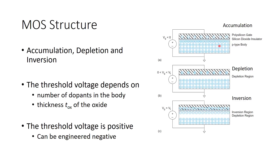In the first part of the figure, you can see that there is a polysilicon gate, silicon dioxide which acts as an insulator, and there is a p-type semiconductor. There is a voltage applied between the gate and the body of this structure, and that voltage is called the gate voltage Vg. Initially it is less than zero volts — it is negative.